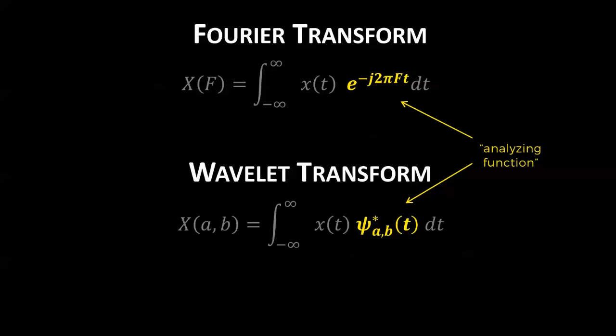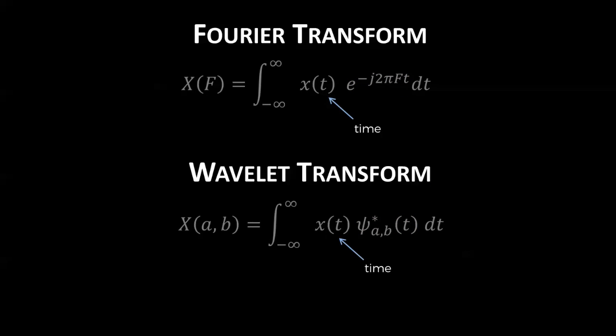Both functions transform a signal which is a function of time. However, the Fourier transform outputs coefficients which correspond to frequency, while the wavelet transform outputs a 2x2 matrix of coefficients which are identified by their scale and translation.